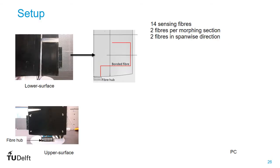An example of fiber placement is shown on the top left figure that depicts the lower surface of the wing. The red line you see there is the fiber that runs through the surface and connects to the fiber hub. We have in total two fiber optic sensors installed in the wing, in the top and in the bottom of each module. And we also have fibers installed in a spanwise direction.